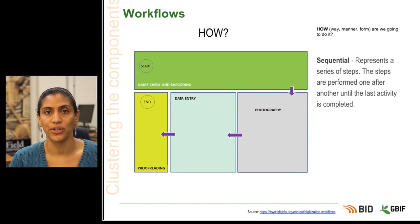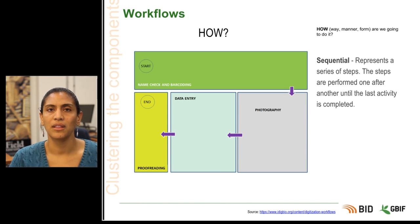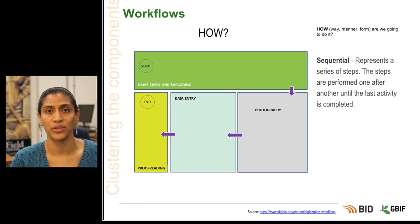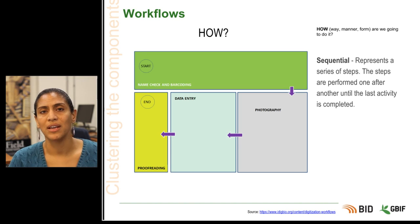Sequential workflows are simple and represent a unidirectional series of steps with a single start and end. The important part is that each task must be completed before the next one can start. In this example, the sequence is name checking first, photography second, data entry third, and proofreading fourth.